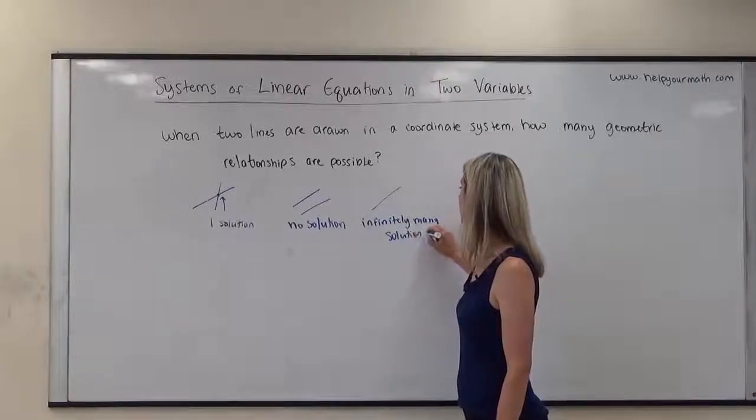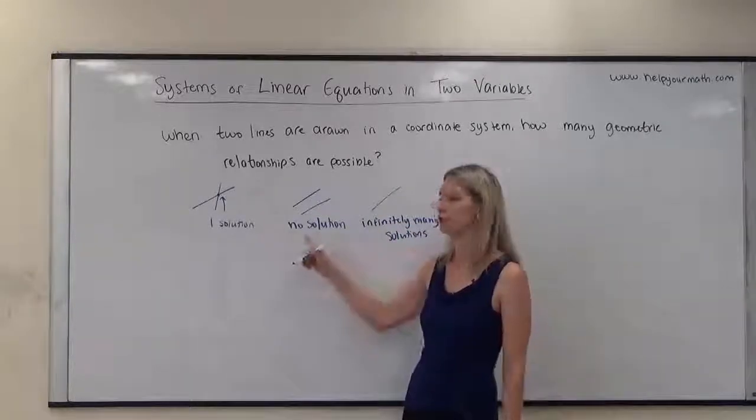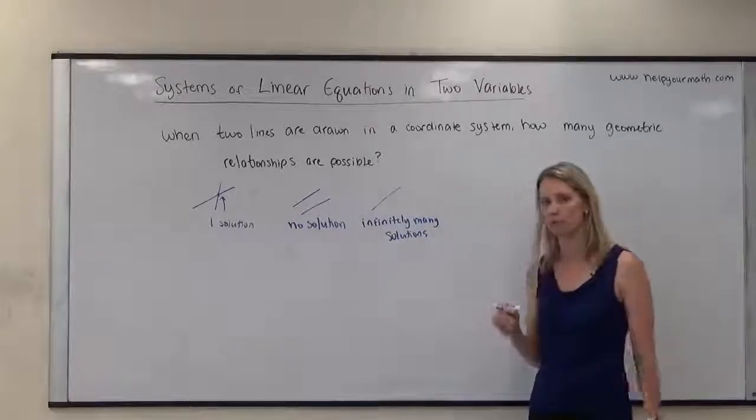Now, how can we recognize if we're given equations whether there's going to be one solution, no solution, or infinitely many solutions? Well, for one solution, they would have two different slopes.